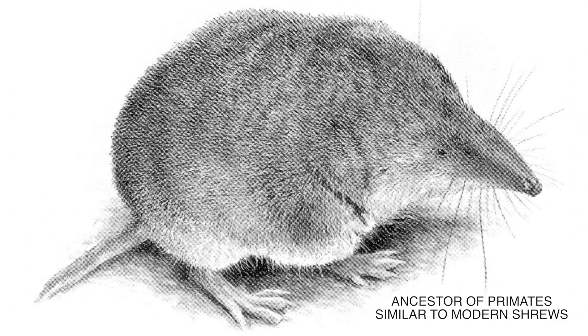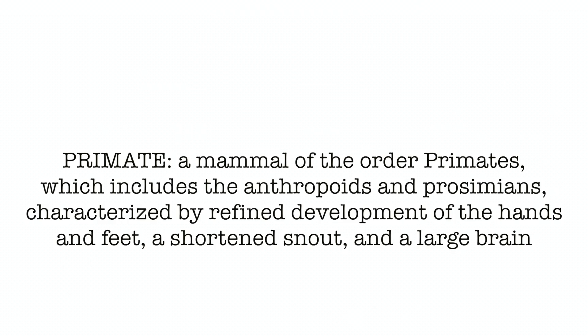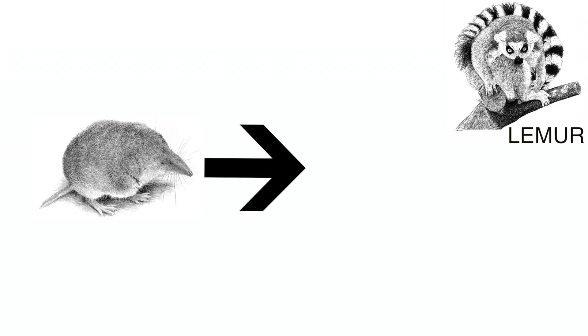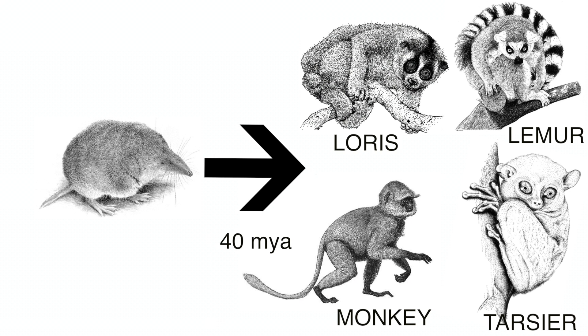It is believed to share similarity with modern shrews and counts as an ancestor of modern primates. A primate is a mammal of the order primates, which includes the anthropoids and prosimians, characterized by refined development of the hands and feet, a shortened snout, and a large brain. These beings went on to become primates similar to modern lemurs, lorises, tarsiers, and monkeys, around 40 million years ago.